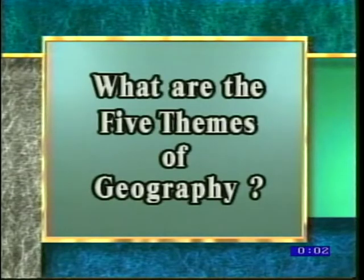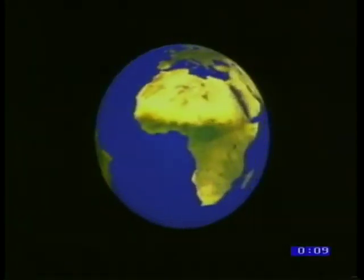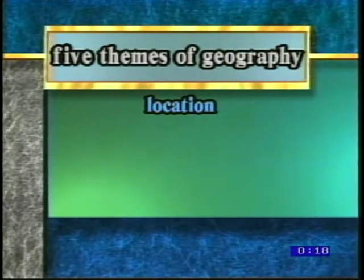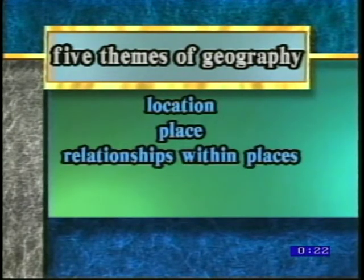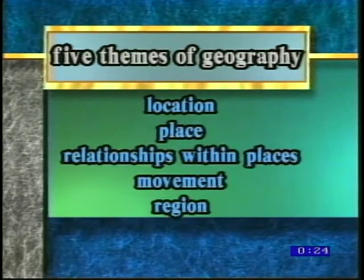What are the five themes of geography? In an effort to better define the impact of geography on our lives and the world around us, geographers have divided the study of geography into five basic categories or themes. These five themes are location, place, relationships within places, movement, and region. We'll explore each of these themes individually.